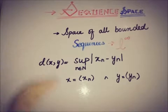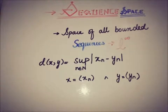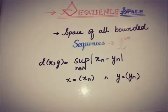We know the three basic conditions of a metric. The first is that it should be greater than zero, and if it is zero, then the two terms must be equal. They have symmetry in it and also satisfy the triangle inequality. So moving toward it.